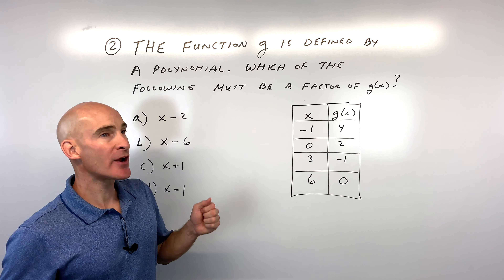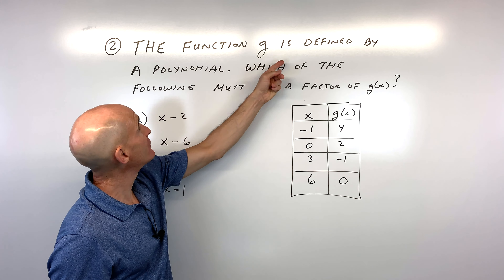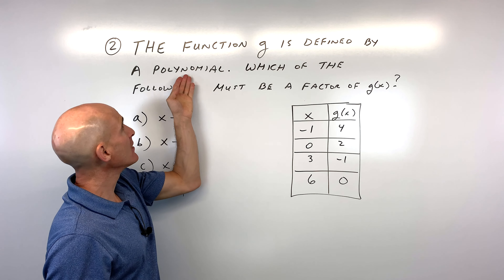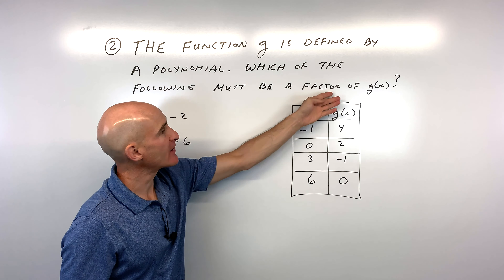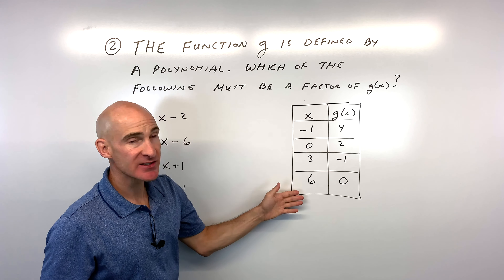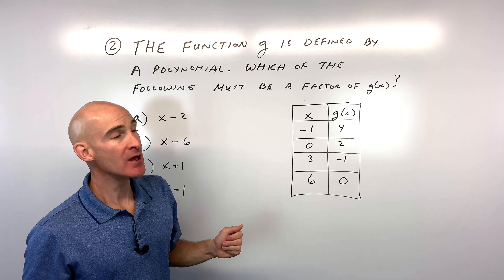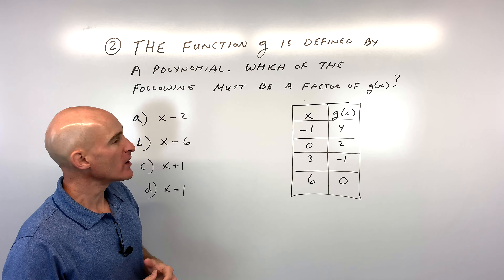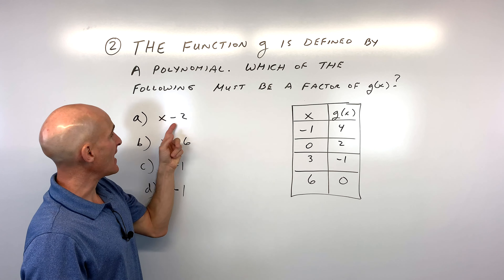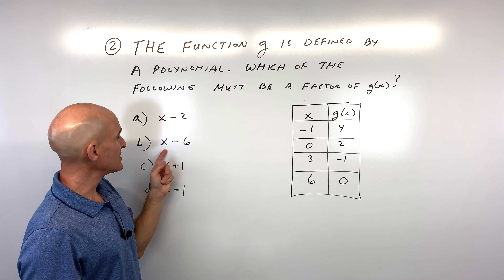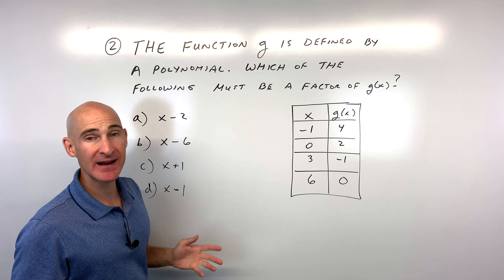Number two — see if you can do this one on your own. It says the function g is defined by a polynomial. Which of the following must be a factor of g of x? They give us some points on the polynomial. Is the factor x minus two, x minus six, x plus one, or x minus one?